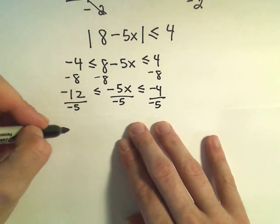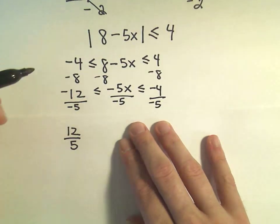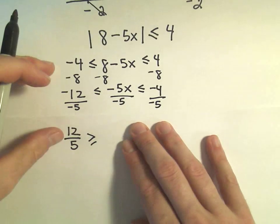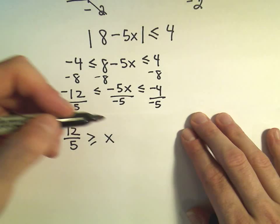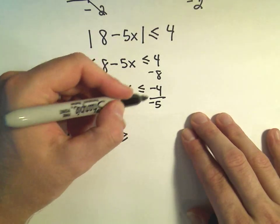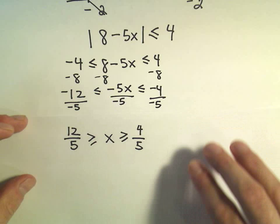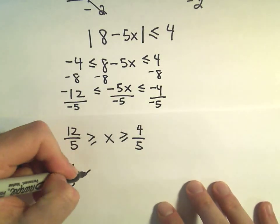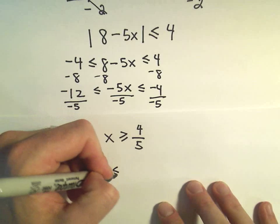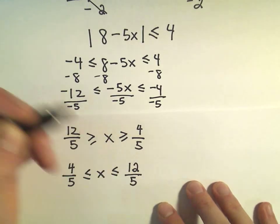Okay, so we've got a positive 12 fifths on the left. Again, my inequality flips direction. The negative 5s will cancel, leaving me with just x. Again, the inequality flips. And then we would have positive 4 fifths. Equivalently, we could write this as 4 fifths less than or equal to x less than or equal to 12 fifths.